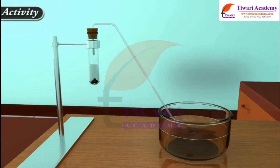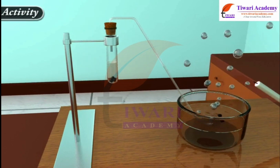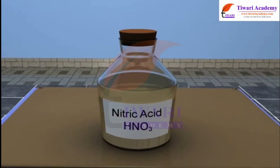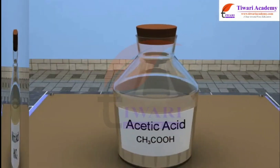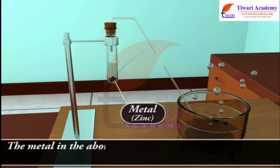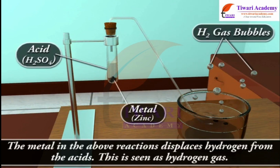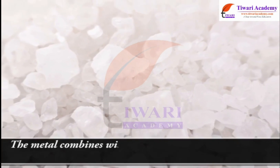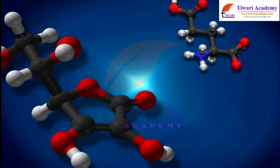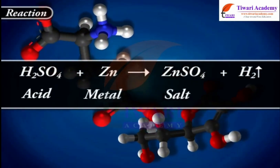Pass the gas being evolved through the soap solution. Take a burning candle near a gas filled bubble. Repeat this activity with some more acids like HCl, HNO3 and CH3COOH. The metal in the above reactions displaces hydrogen from the acids — this is seen as hydrogen gas. The metal combines with the remaining part of the acid and forms a compound called salt. Thus the reaction of a metal with an acid can be summarized as: acid plus metal gives salt plus hydrogen gas.